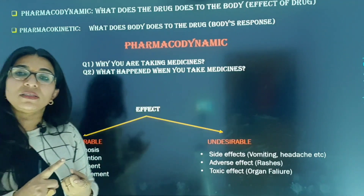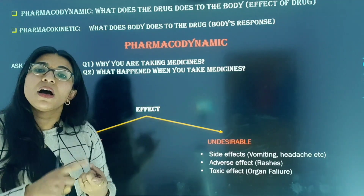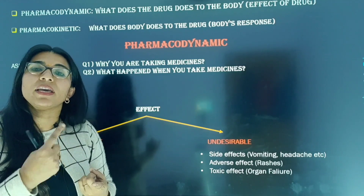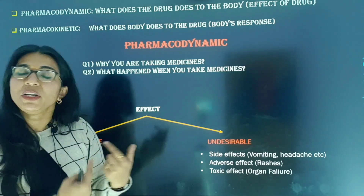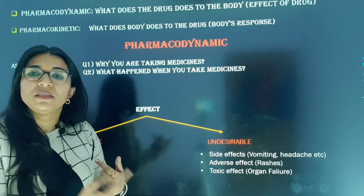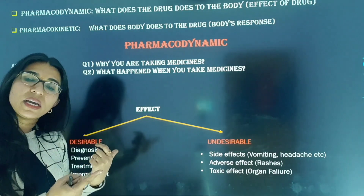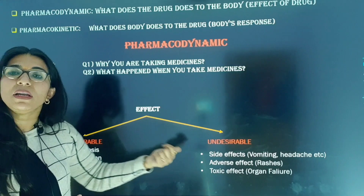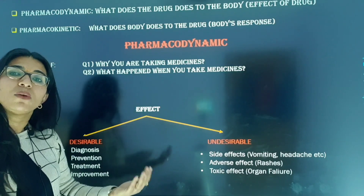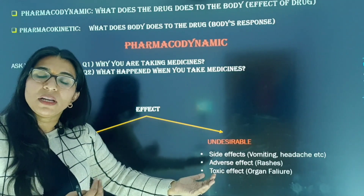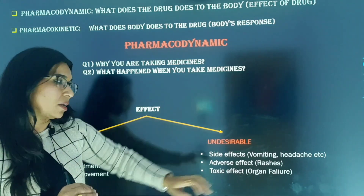So pharmacodynamics means: why are we taking this medicine, and what effect does it produce when we take it? Whenever you take any medicine, two types of actions are produced — doh tariqe ke action produce honge. One is desirable — what we want — and another is undesirable — what we don't want, joh hume nahi chahiye.